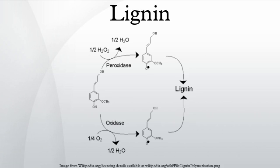Lignin was first mentioned in 1813 by the Swiss botanist A. P. de Candolle, who described it as a fibrous, tasteless material, insoluble in water and alcohol but soluble in weak alkaline solutions, and which can be precipitated from solution using acid. He named the substance from the Latin word lignum, meaning wood.